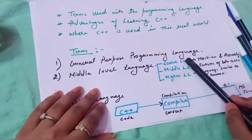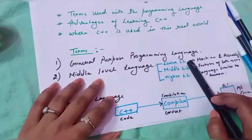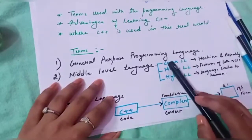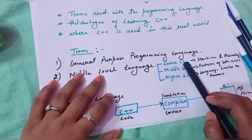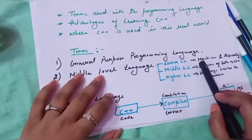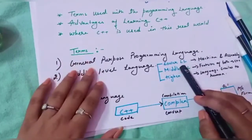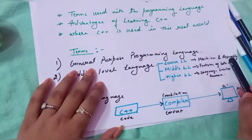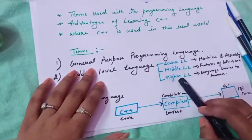Now, what is a middle level language? Before starting with this, we should know how many levels of languages there are. There are three levels: first is lower level language, second is middle level language, third is higher level language. Lower level languages are those which are directly close to the computer system — the computer can directly understand these codes. For example, machine level language and assembly level language.